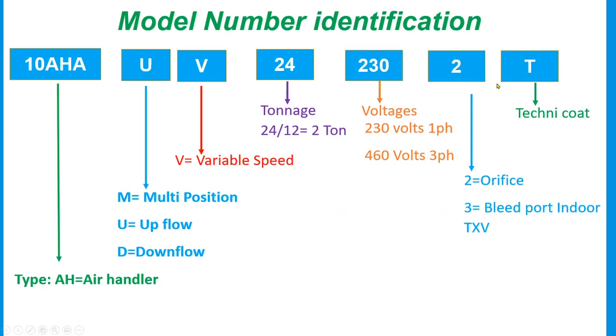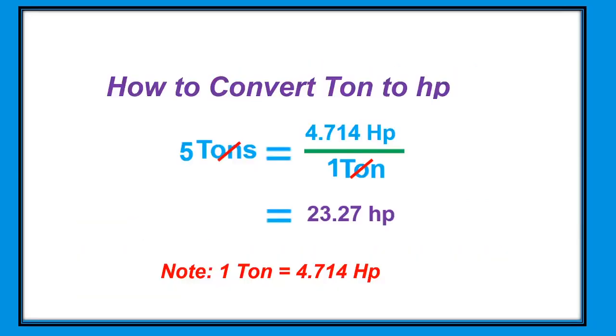Now let's proceed to conversion from ton to horsepower. Note: one ton equals 4.714 horsepower. For example, in this case we have 5 tons times 4.714 horsepower divided by 1 ton. We're going to cancel the tons, so the answer is 23.25 horsepower. This equals 5 tons.